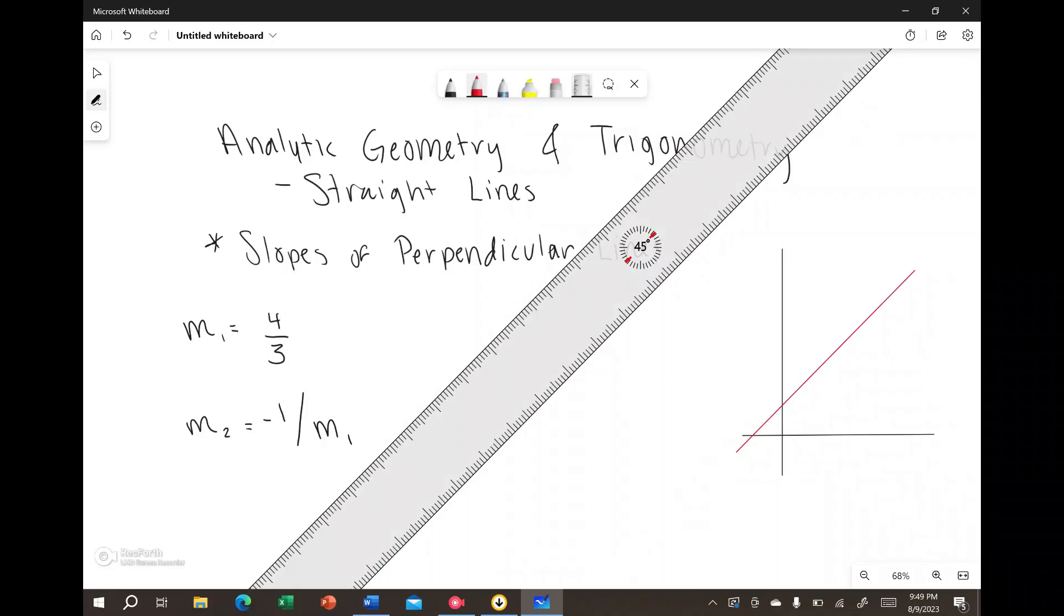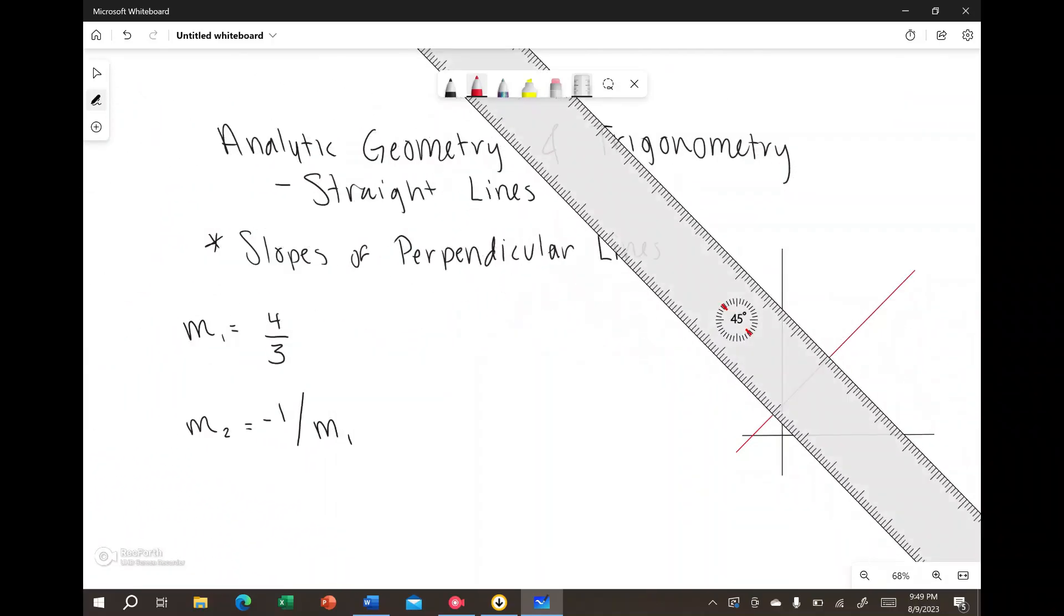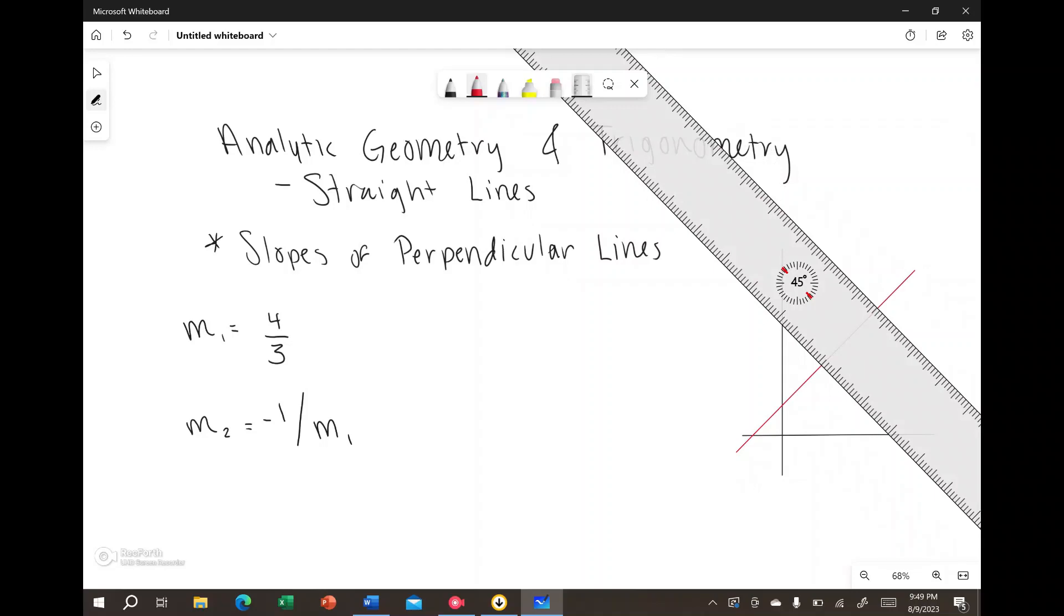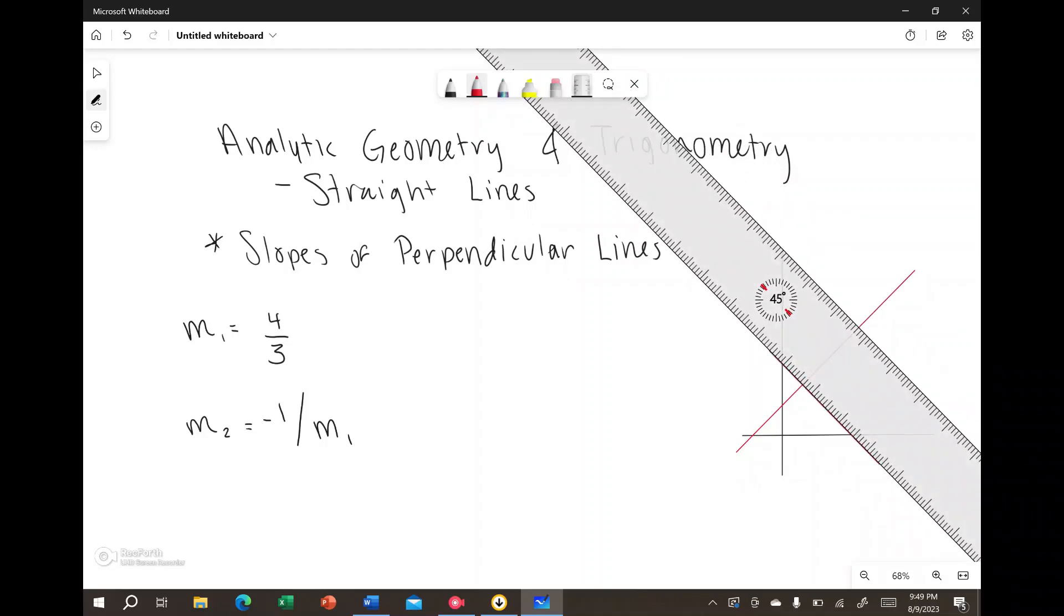So here I have a line. It's positive because if you're going from left to right on the x-axis, it's going uphill, so positive. That's kind of how I think of it.